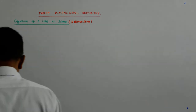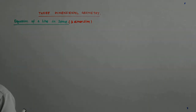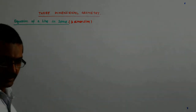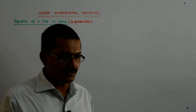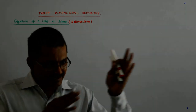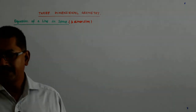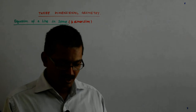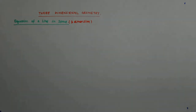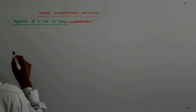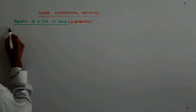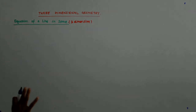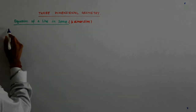Once that is understood, our line has to be a unique one. If you are trying to write the equation of a line, then it has to be a unique line. There are two ways in which a line can be unique — there are many more ways, but we are going to learn two.